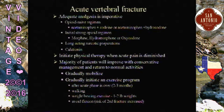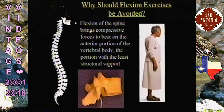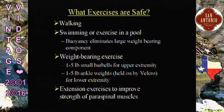You don't have to institute osteoporosis prevention therapy immediately at the time of an acute fracture — it's not an emergency. You can wait until the pain is over and then institute therapy. It's important to avoid flexion exercises because they put so much compressive stress on the anterior vertebra, which is where compression fractures occur. Safe exercises include walking, swimming, light weight-bearing, and extension exercises for the spine to help prevent kyphosis.